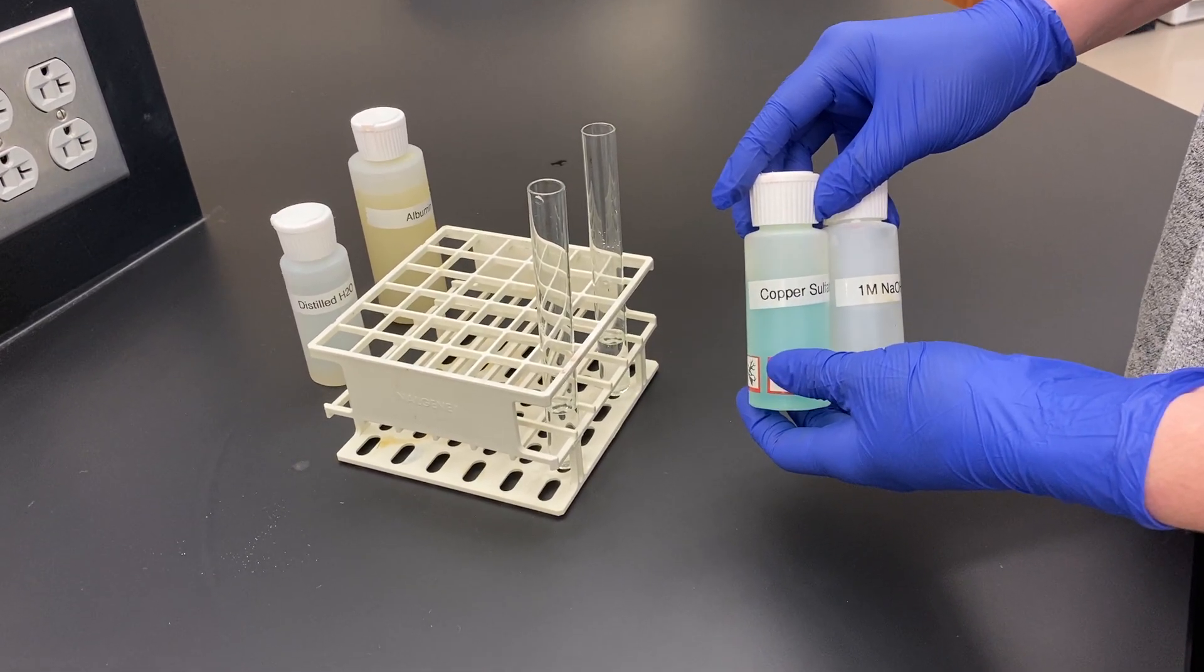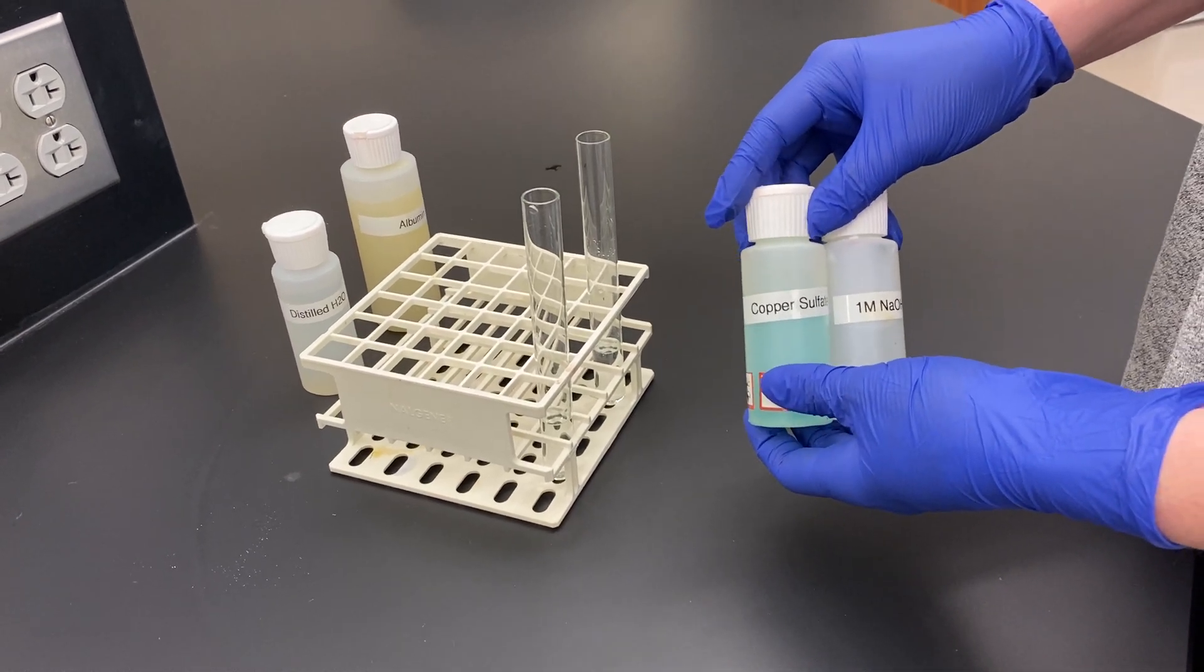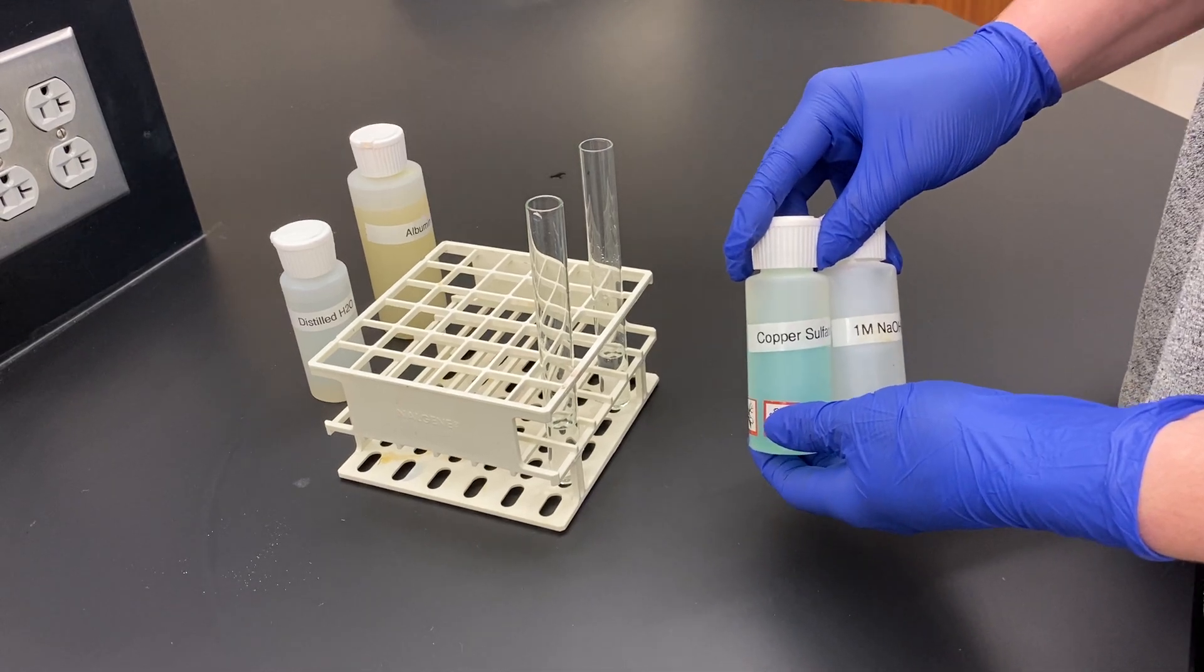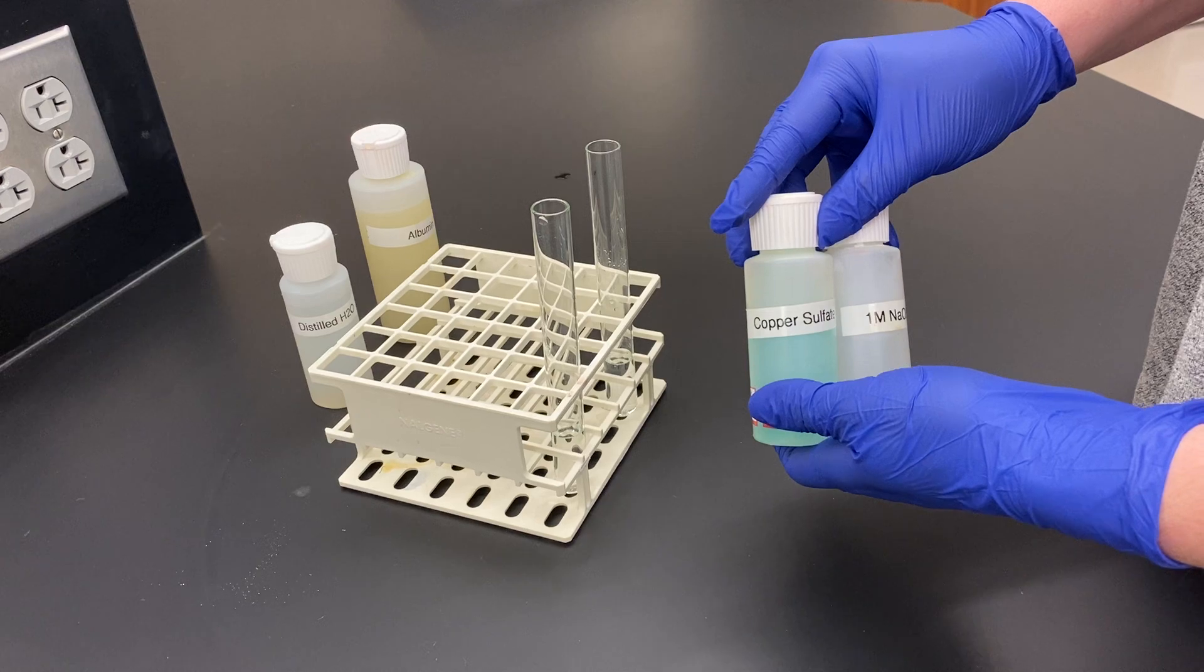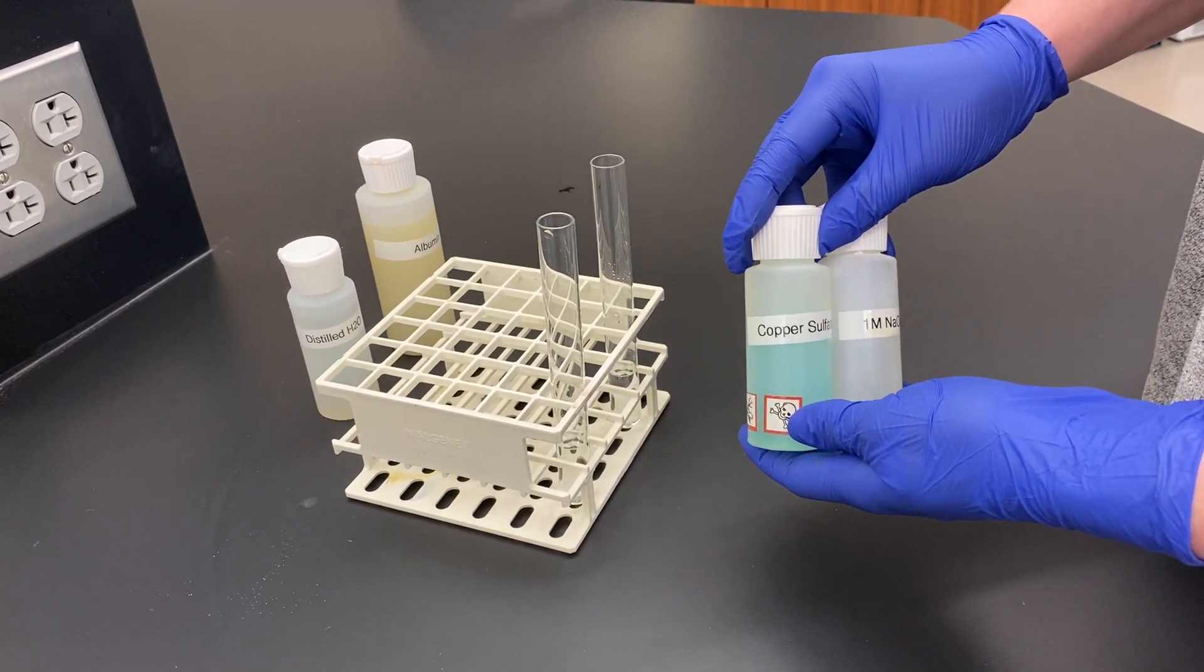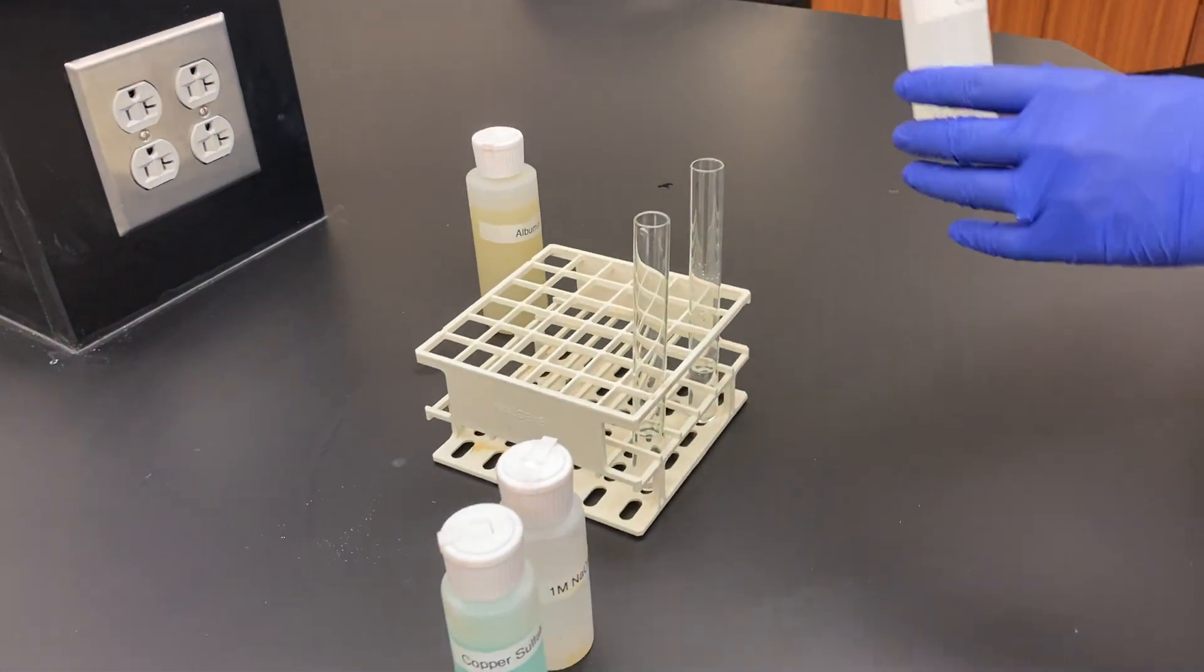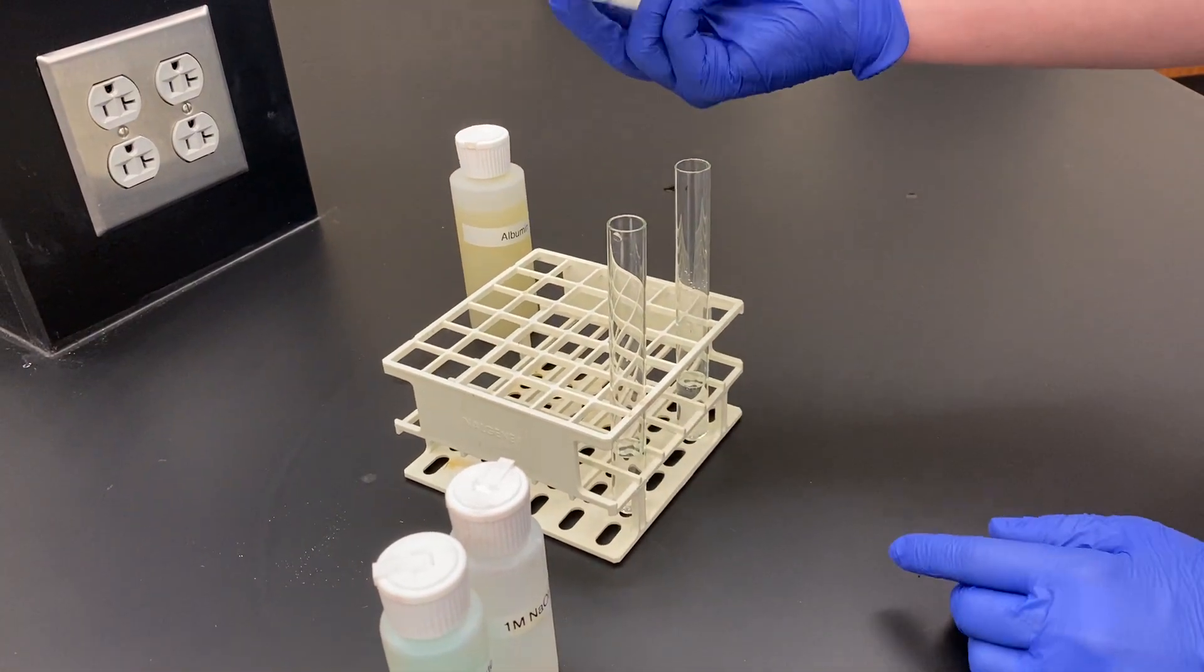We're going to be able to examine the extent of peptide bonds, or the amount of proteins within our sample, based on the deepening of that color. The darker that color, the more proteins, the more peptide bonds are present in that sample. What we're going to do is add the samples first this time. We're going to add DI water for our negative control, 10 drops.